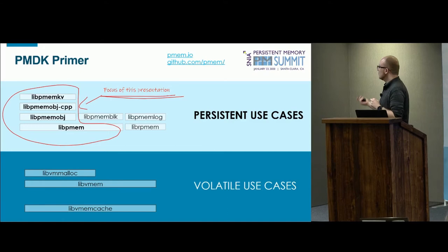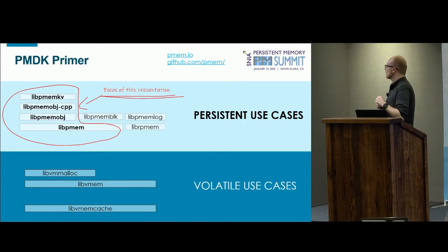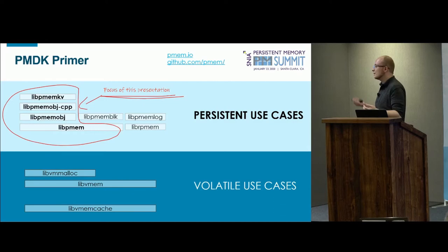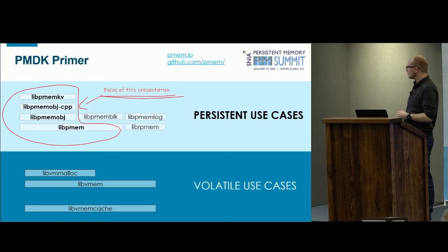The more interesting libraries are the persistent ones. At the bottom we have LibPM and LibRPM. LibPM is the very bare bones of what you really need for writing software for persistent memory — it handles mapping files, telling you whether you have actual persistent memory, and ships with optimized memcopy and memset. LibRPM is our example implementation of how to use RDMA in combination with persistent memory. Moving up we have LibPMBJ, our flagship library, which implements memory allocation and transactions. On top of that is LibPMJCPP, providing a nicer C++ interface, and LibPMKV, providing an even simpler interface.